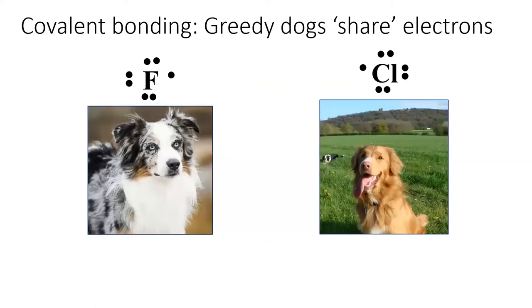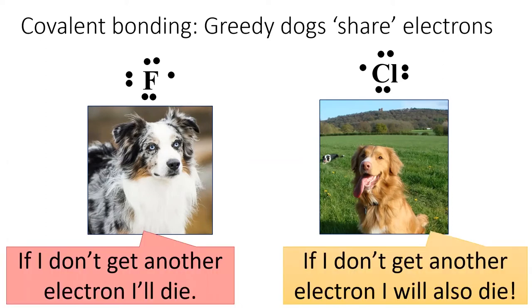Let's imagine a fluorine atom and a chlorine atom as two dogs. Both of these atoms are halogens, meaning that they are one electron away from having a complete octet.